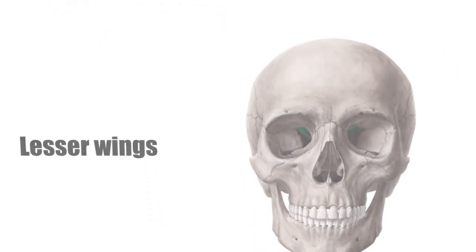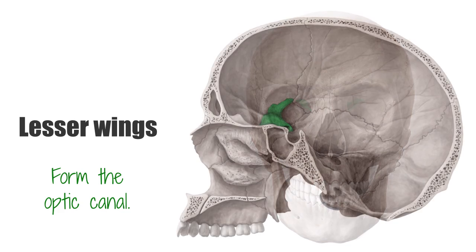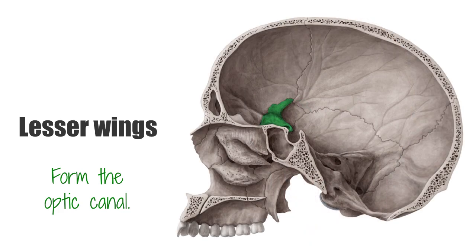The sphenoidal sinuses are located in the sphenoid body behind the nasal cavity and are divided by a septum. The lesser wings arise supralaterally from the sphenoid body where they form the optic canal, which contains the optic nerve and the ophthalmic artery. The inferior surface participates in the lateral margin of the orbit, while the superior surface forms part of the cranial cavity.